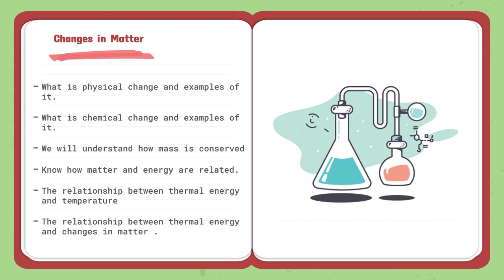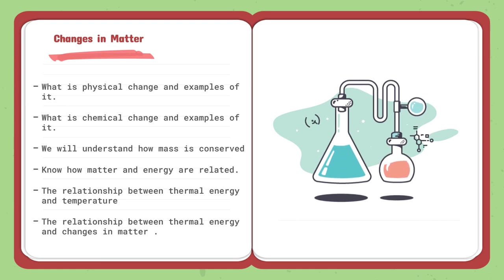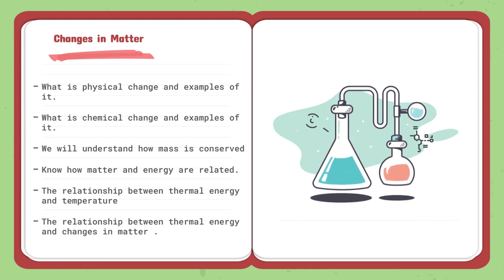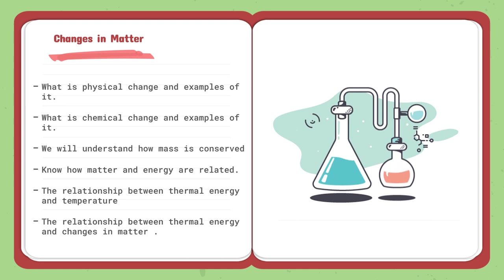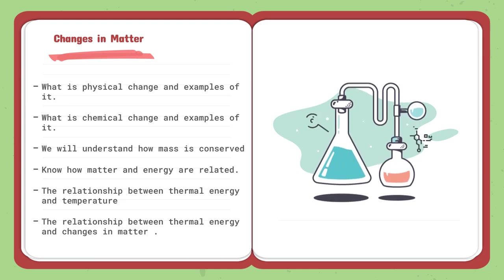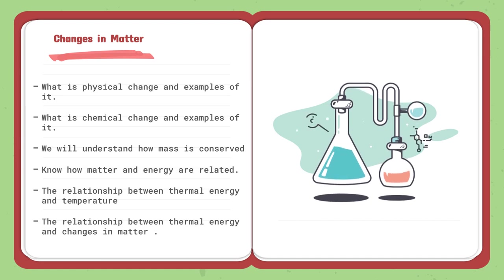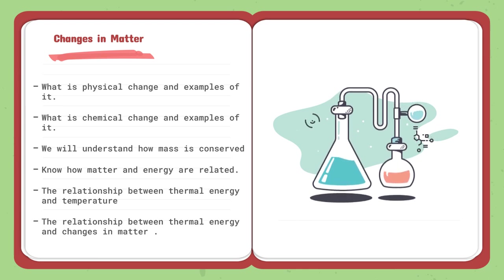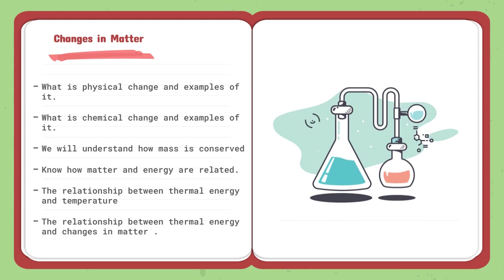Moving on to the last lesson of topic one, which is changes in matter. We know that there is physical change and chemical change. We will know more about the physical change - what is physical change, how it happens, and what are some examples of it. What's the difference between it and chemical change? We will know what chemical change is and give examples of it. We will understand how mass is conserved. And also, there are two new things we will learn, which is energy and its relationship with matter - the relationship between thermal energy and temperature and the relationship between thermal energy and change in matter.